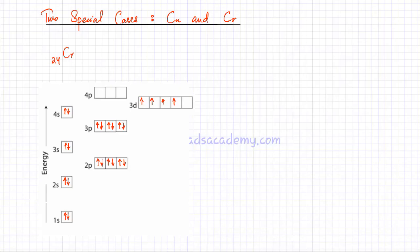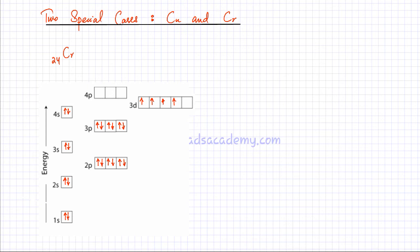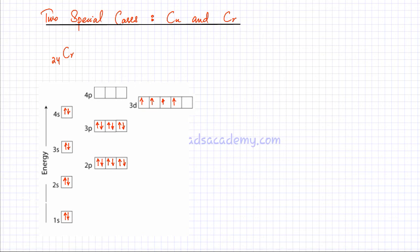In this video lecture, I am going to discuss the electronic configuration of two special cases. We are going to discuss copper and chromium. There are some atoms that have anomalies in their electronic configurations, but we are only going to stick to copper and chromium. So I am going to pick chromium first.